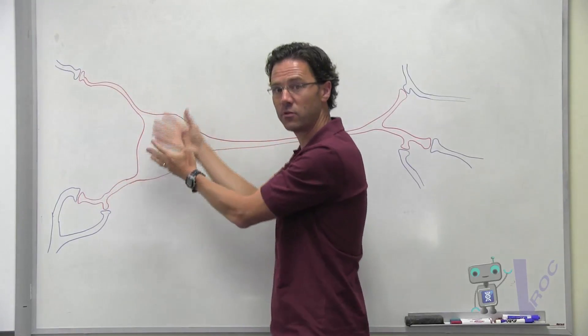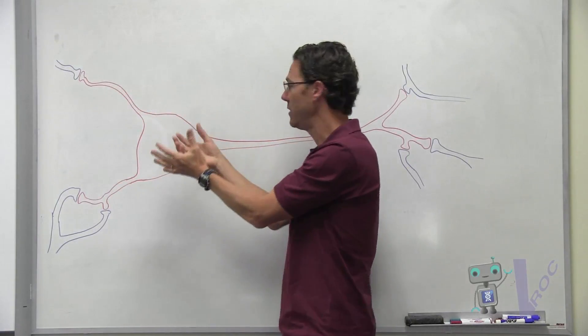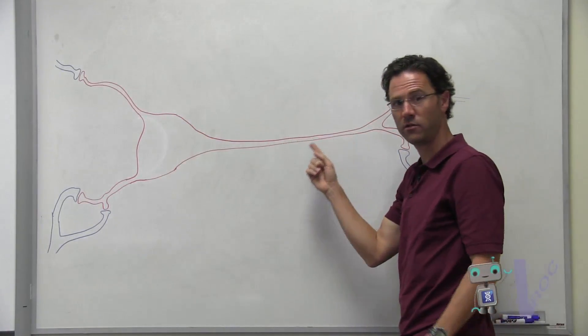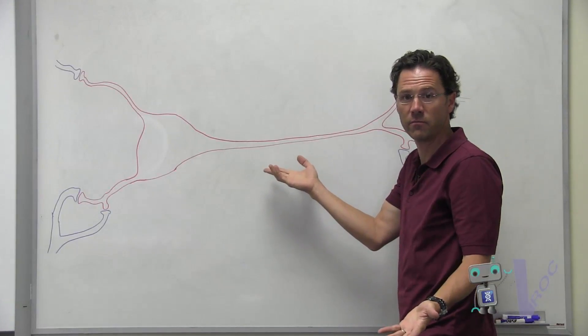It adds it all up—it builds up electrical activity. And if it gets enough, it sends an electrical spike called an action potential, or we call it firing, the neuron firing.